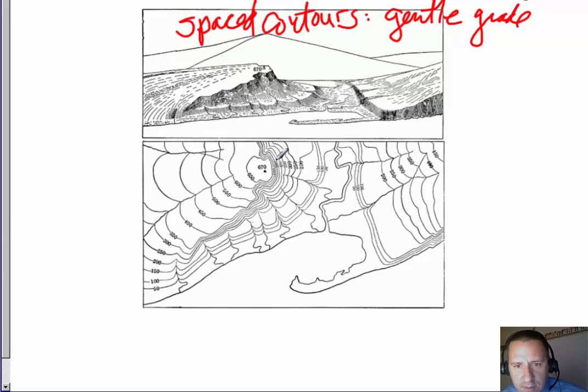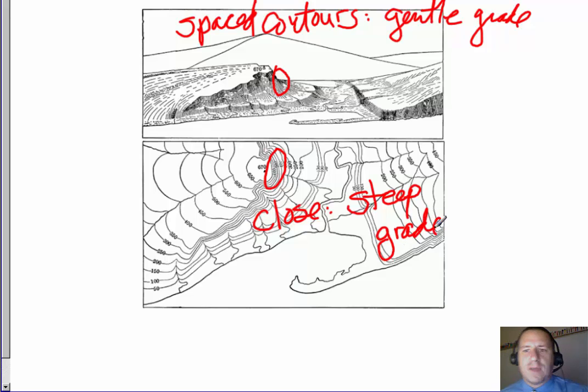However, you can see right in here, the contour lines are quite tight together. That represents, so close contour lines represent a steep grade. So the closer the lines are together, the steeper it is. The further apart they are, the more gentle the grade.